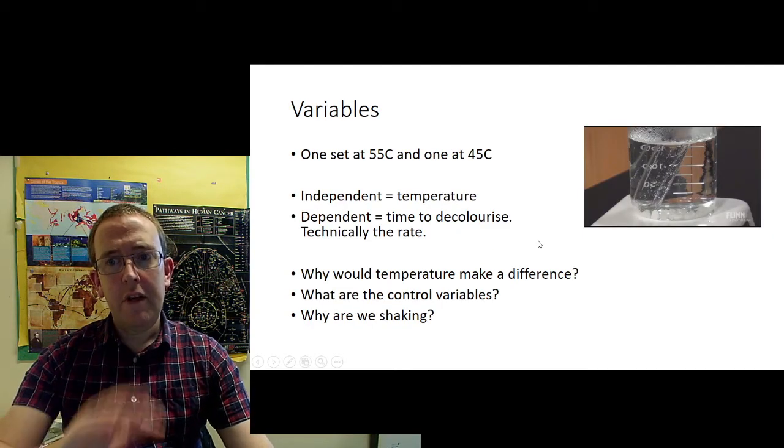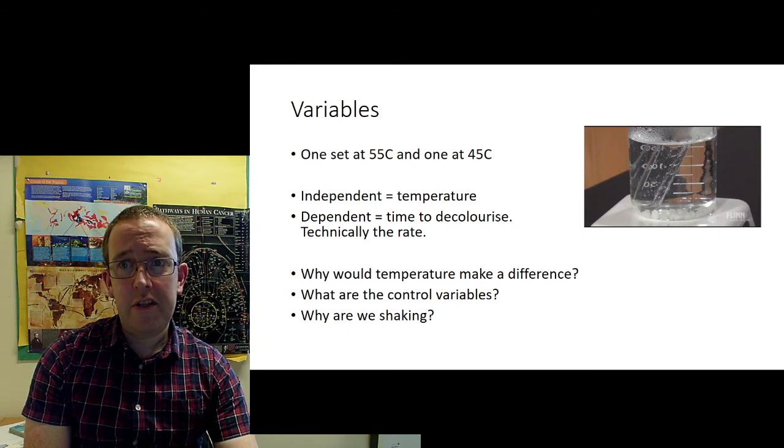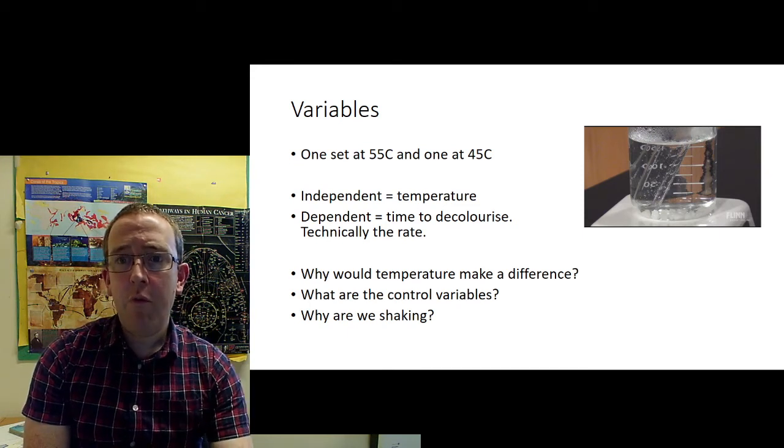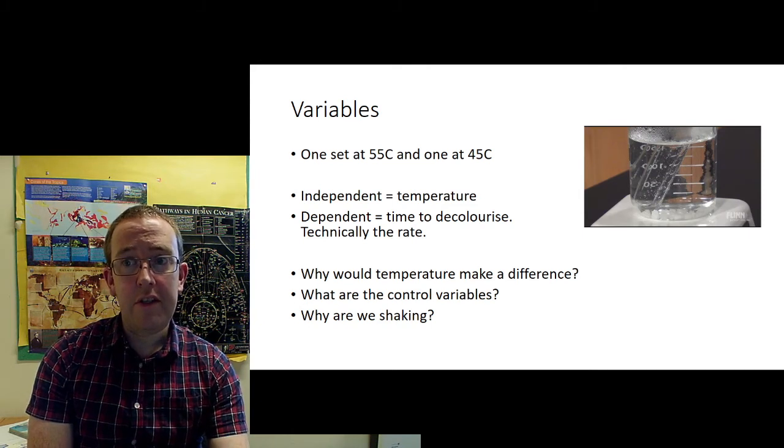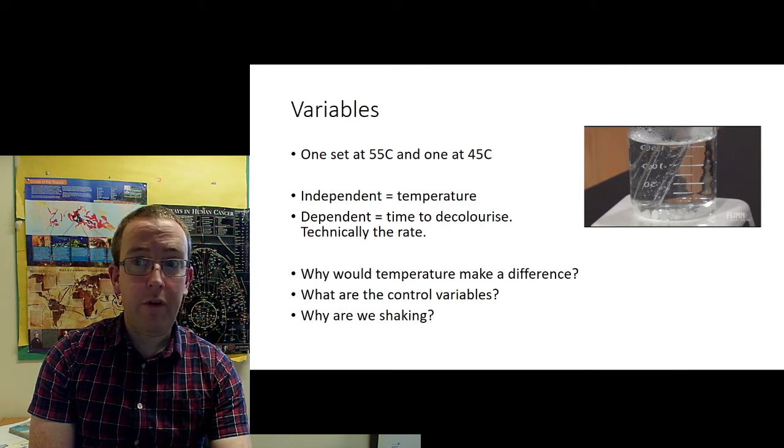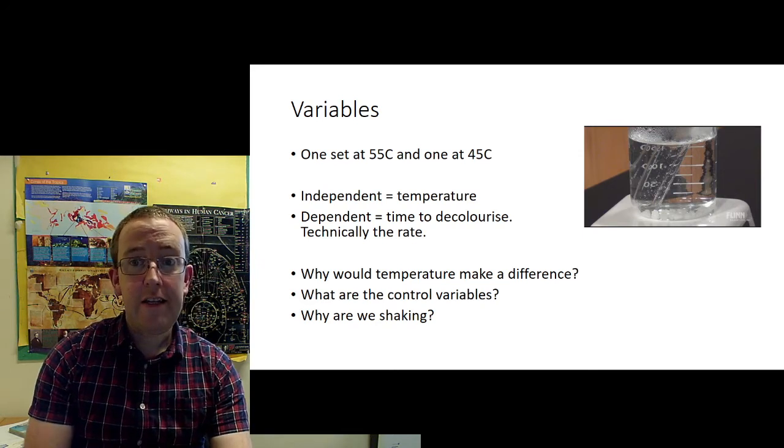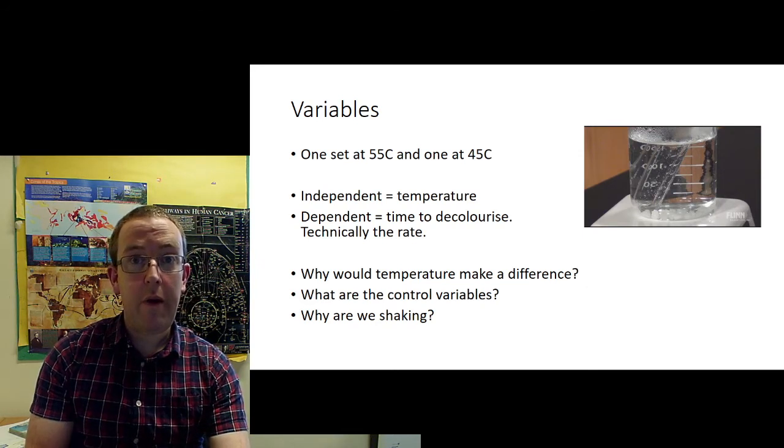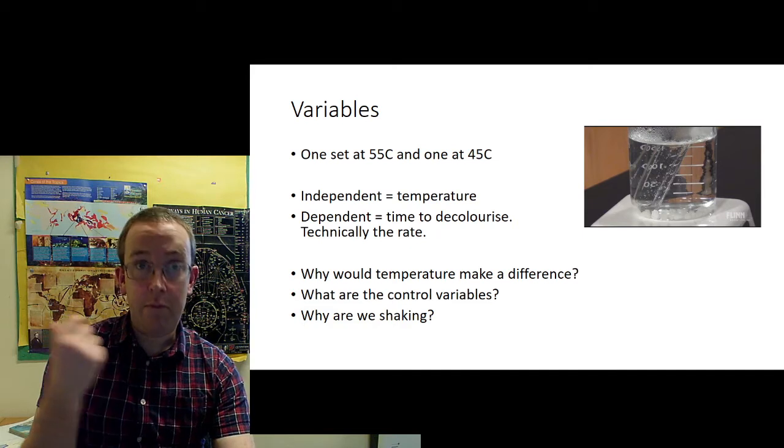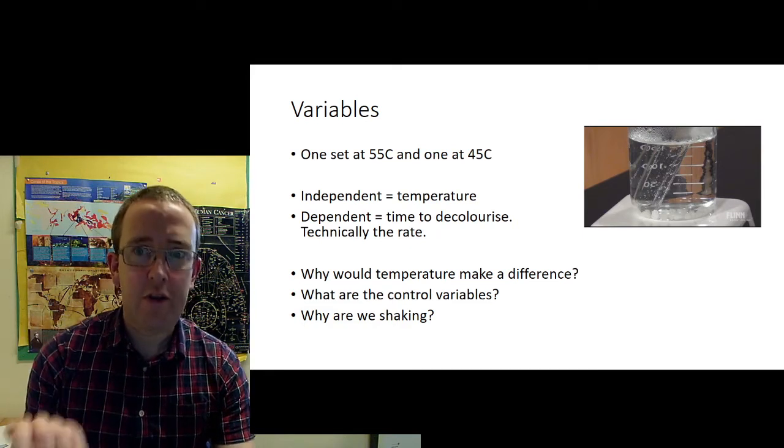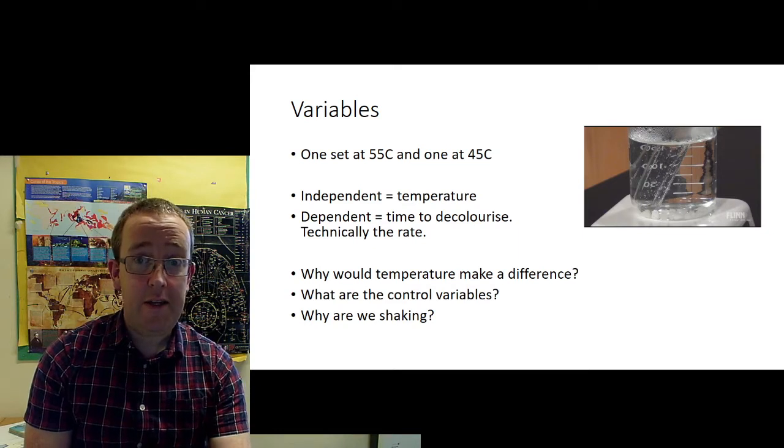In terms of variables, this is not too tricky to understand, you should have got this from all your pre-reading and understanding. You're going to have one set of tubes at 55 degrees C and one at 45 degrees C. The independent variable is temperature. The dependent variable is the time the blue colour takes to disappear, or more accurately, the rate at which the blue colour disappears.